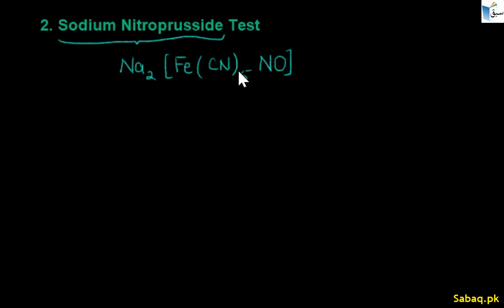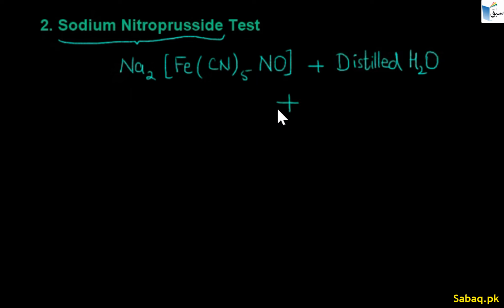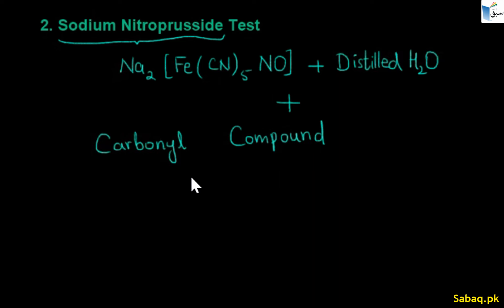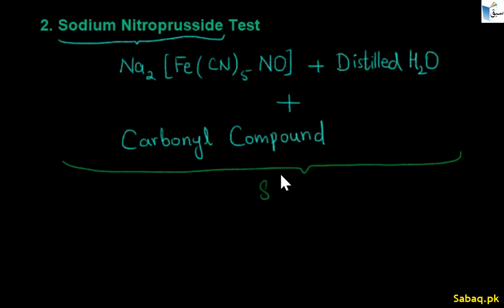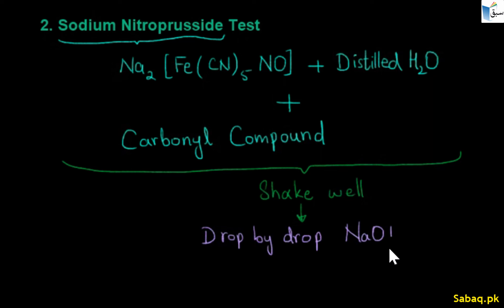We dissolve sodium nitroprusside in distilled water in a clean test tube. Then we add our compound — the carbonyl compound we want to identify as either an aldehyde or a ketone. We shake the solution. Next, we add sodium hydroxide solution drop by drop.